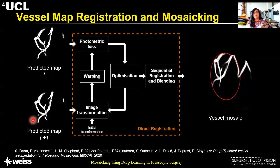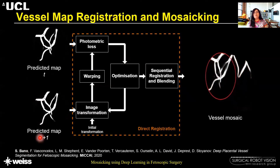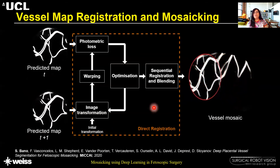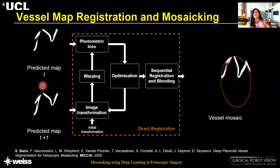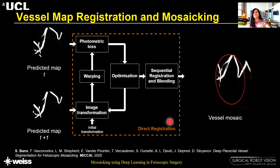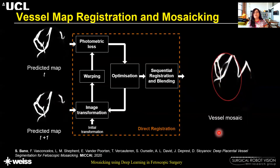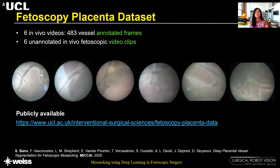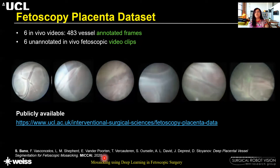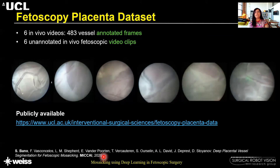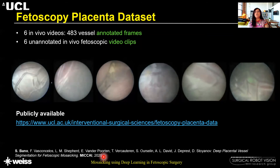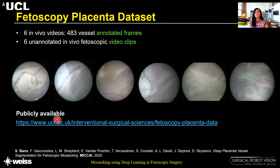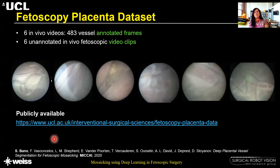Even in consecutive frames the vessels were quite consistent, which helped us use direct image registration methods by optimizing the photometric loss for obtaining the transformation between consecutive frames, and then by sequential registration and blending we managed to get quite good vessel mosaics. The dataset used for validating our segmentation and vessel registration approach contained six in-vivo videos with about 483 vessel-annotated frames, and six unannotated in-vivo video clips for validating the registration approach. This dataset, named the Fetoscopic Placenta Dataset, is available on our center website.